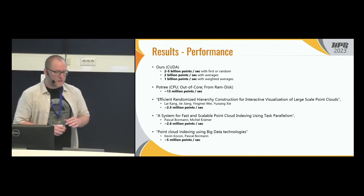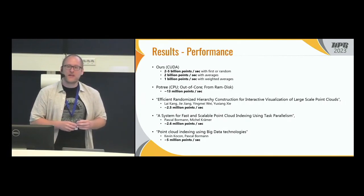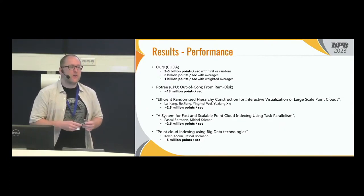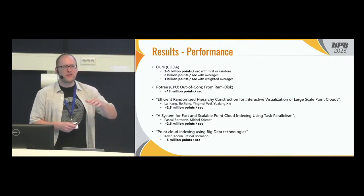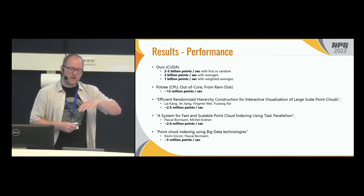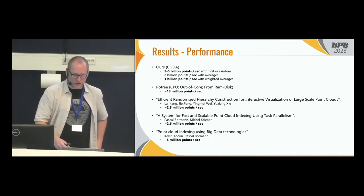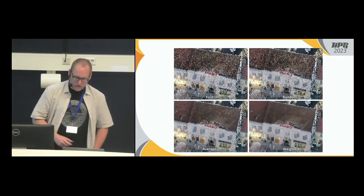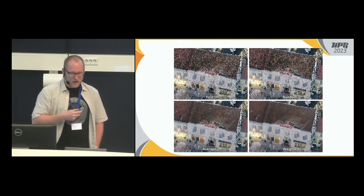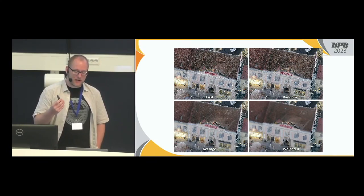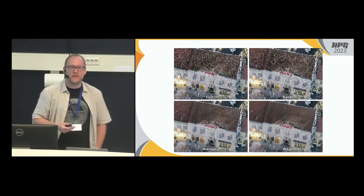Regarding performance, we can construct this structure at a rate of about 2 to 5 billion points per second with the first-come or random strategy, about 2 billion points per second with average strategy, and about 1 billion points per second with weighted average. Compared to CPU-based state of the art, we are about 80 to 400 times faster. We benchmarked from a RAM disk to ensure file I/O wasn't the limiting factor — typically about 100 times faster. Visually, with first and random strategies the voxels have some aliasing issues, while average and weighted strategies allow you to almost read text in the voxelized representation.